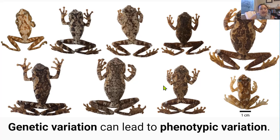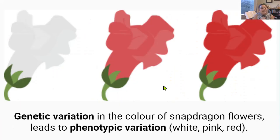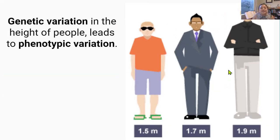Here's another example of how genetic variation can lead to phenotypic variation. These frogs are the same species, but they all look different in terms of size, color, and body shape. These snapdragon flowers also show how genetic variation leads to phenotypic variation, because there are three flower colors available: white, pink, and red. Even different heights of people are an example of how genetic variation leads to phenotypic variation.